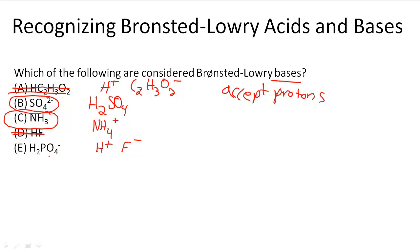And E, H2PO4. Now it could dissociate further into HPO4 2-negative. But what it's going to do really is accept another proton and become H3PO4. So this can be considered a Bronsted-Lowry base because it can accept protons. So E is also an answer.